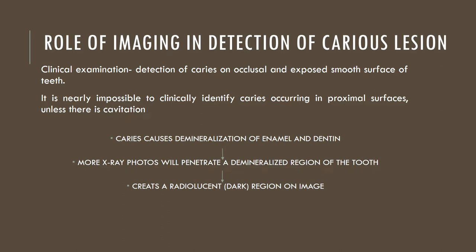The role of imaging in detection of caries lesions is very important. Clinical examination is important for detection of caries on the occlusal and exposed smooth surfaces of the teeth, whereas it is nearly impossible to clinically identify caries occurring in proximal surfaces, unless of course there is obvious cavitation. Caries causes demineralization of enamel and dentine, which leads to more X-ray photons penetrating a demineralized region of the tooth when exposed to radiation. Hence, it creates a radiolucent or dark region on the image, giving the impression of caries on the radiographic image.